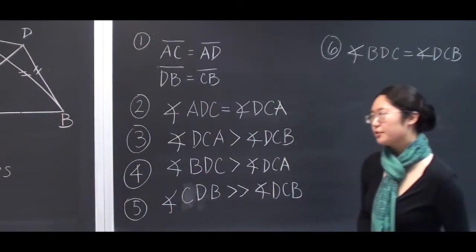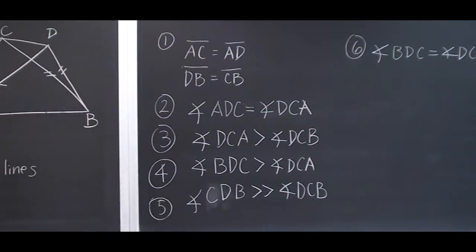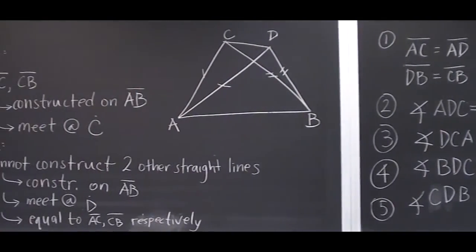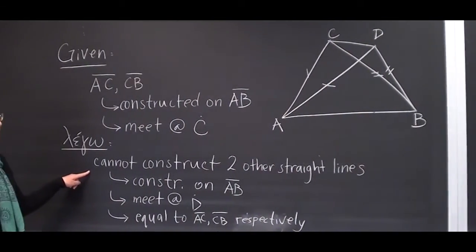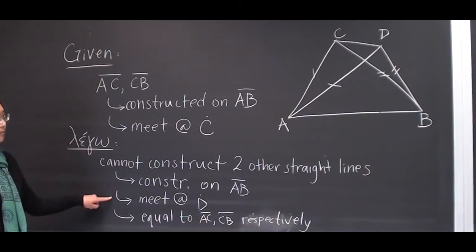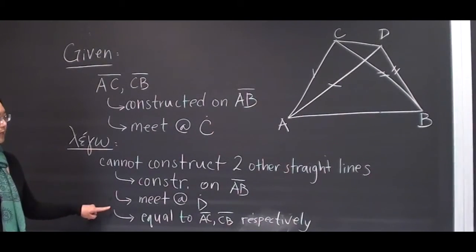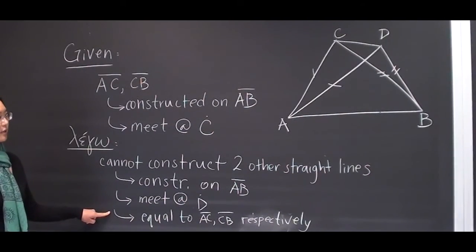Therefore, we cannot construct two other straight lines on the same line AB meeting at another point D, and equal to AC, CB respectively.